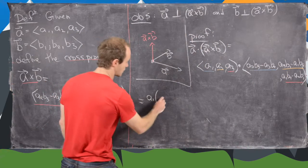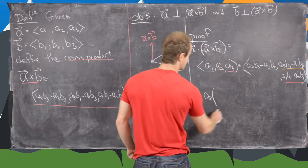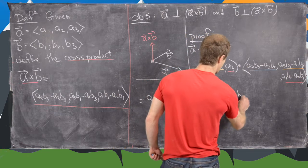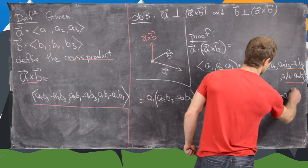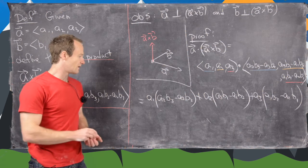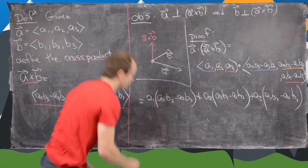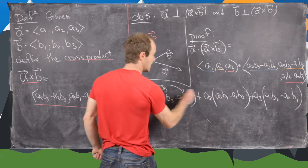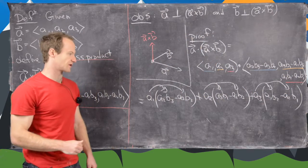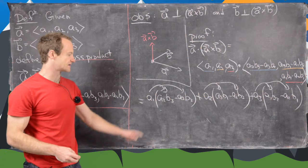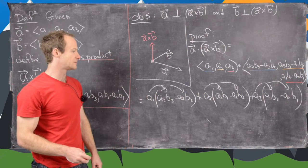So we get a1 times the quantity (a2 b3 minus a3 b2), plus a2 times the quantity (a3 b1 minus a1 b3), and finally plus a3 times the quantity (a1 b2 minus a2 b1). Now if we take a1 and multiply through, a2 and multiply through on both its terms, and a3 and multiply through on both its terms, we'll find that we have exactly enough pairs to cancel out.